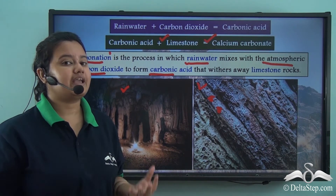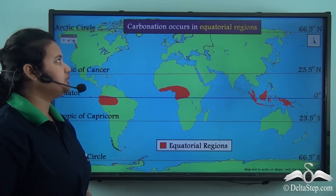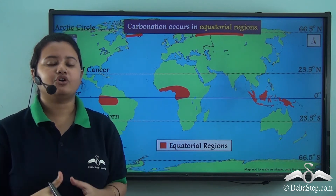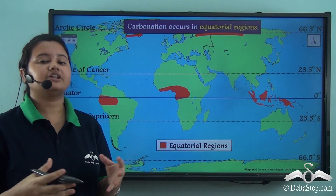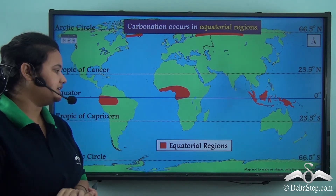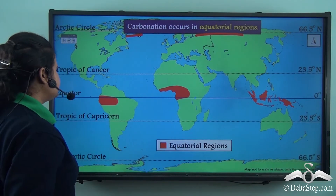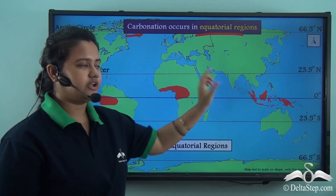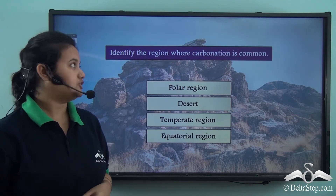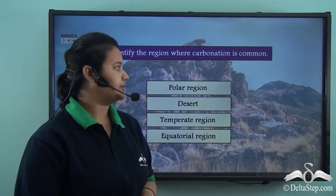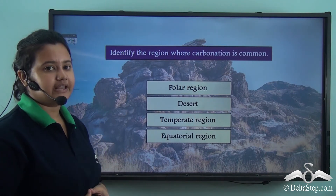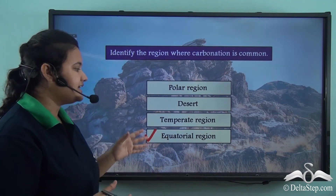Carbonation is very common in equatorial regions because limestone rocks are found in abundance there. In this map we can see the equatorial regions of the world — the region across the equator — where carbonation is very common. Now, identify the region where carbonation is common: is it polar region, desert, temperate region, or equatorial region? The correct answer is equatorial region.